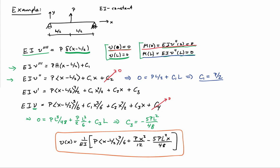So we can put it all together and we have our final relationship that says that v of x is equal to 1 over EI times p times the Macaulay bracket of x minus L over 2 cubed over 6 plus p x cubed over 12 minus 5pl squared x over 48.